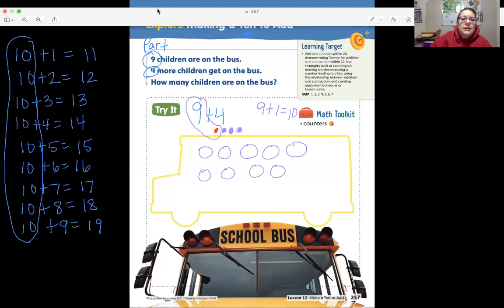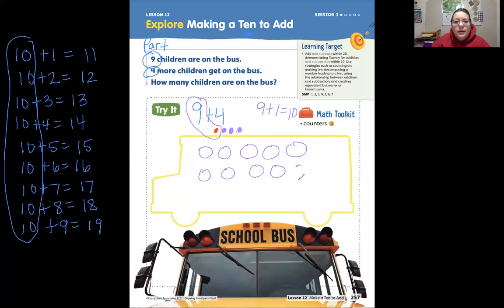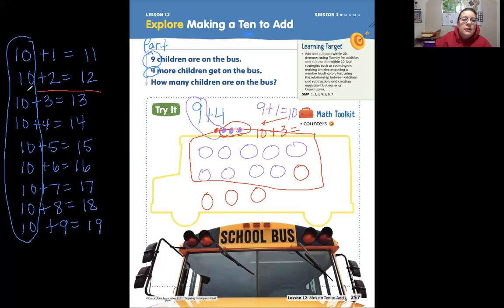Nine plus one makes that group of 10, right? But I still have one, two, three more. So I'm going to bring down the 10. Say that with me: bring down the 10. Now I have 10 plus how many more? 10 plus one, two, three more. So now I have a group of 10. 10 plus three. Here it is: 10 plus three equals 13. Good job.